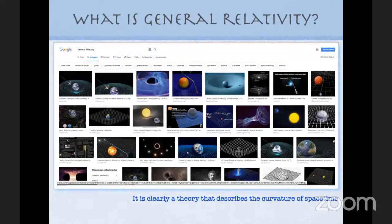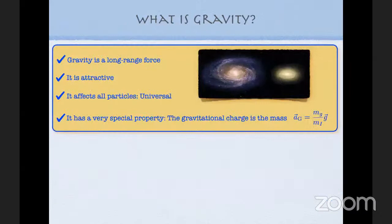If you ask yourself what is general relativity and Google it, you're very quickly convinced that GR is a theory that describes the curvature of space-time. I will try to argue here that this is conventional and there is nothing really deep about this — we can describe the very same theory in terms of torsion and non-metricity. So let's start from what we know about gravity: it is a long-range force, attractive, and universal, affecting all particles. Its coupling constant — its charge — is precisely the inertial mass, which means we have the equivalence principle.